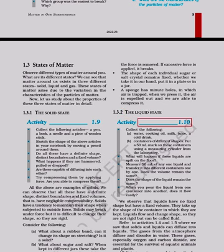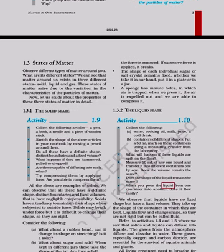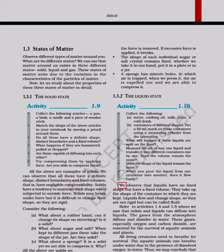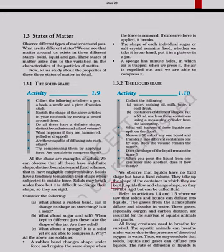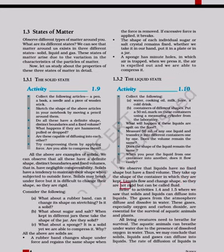1.3.2 The liquid state. Activity 1.10: Collect the following - water, cooking oil, milk, juice, a cold drink - and containers of different shapes. Put a 50 ml mark on these containers using a measuring cylinder from the laboratory. What will happen if these liquids are spilt on the floor? Measure 50 ml of any one liquid and transfer it into different containers one by one. Does the volume remain the same? Does the shape of the liquid remain the same? When you pour the liquid from one container into another, does it flow easily?